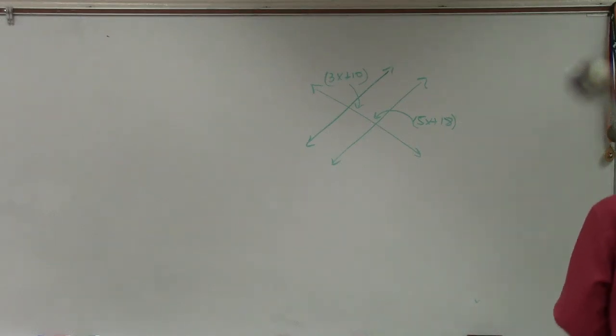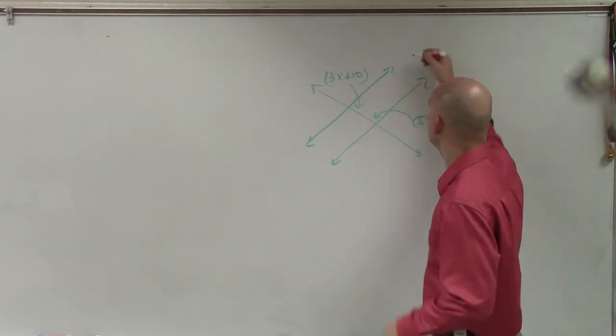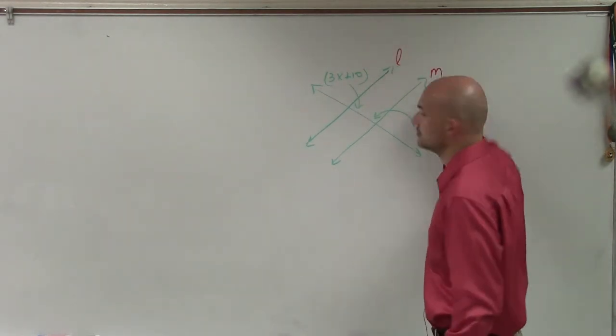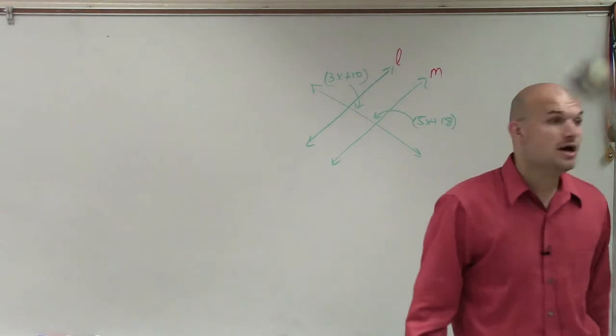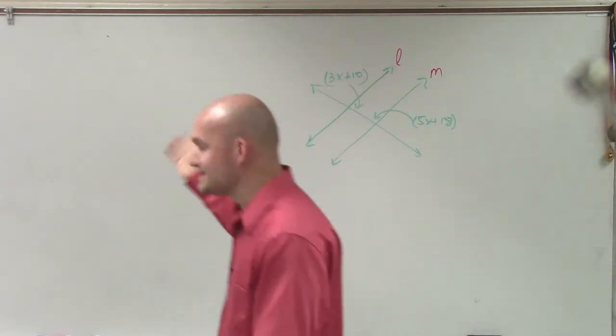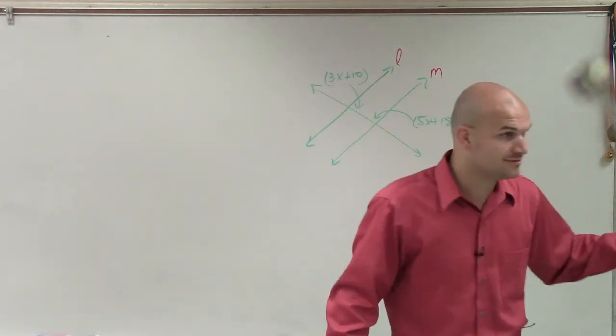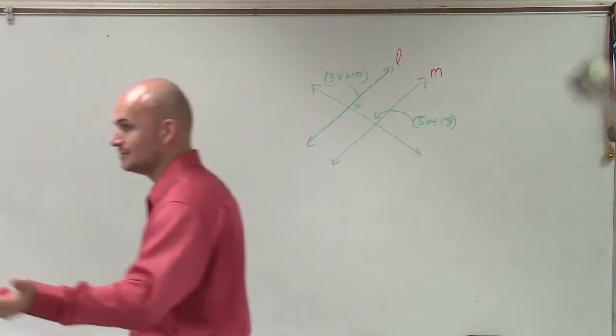Now, again, Taylor, if we look at this, do we know if we have parallel lines? Are L and M parallel? No. I didn't write those little arrows to show that they're parallel, and nor did I say they're parallel. So do not assume they're parallel. They look very parallel, but they're not parallel. All right?